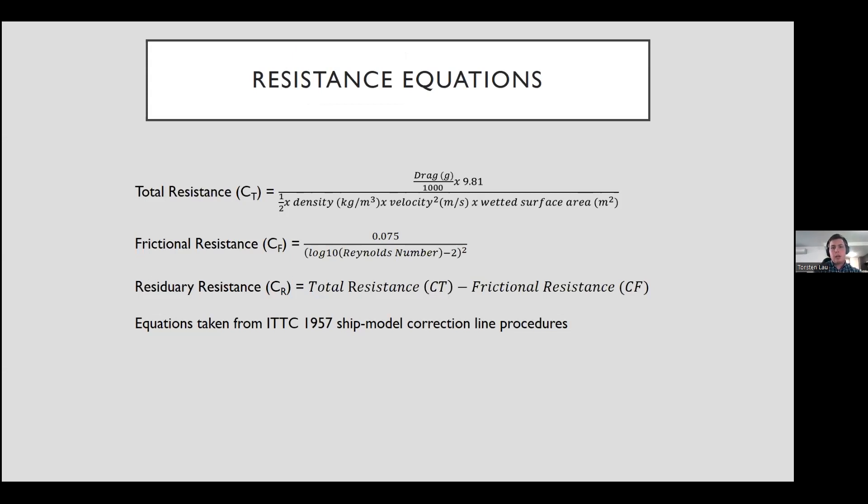After receiving our drag values and getting them all out, we were able to put them into these equations. These equations are taken from the ITTC 1957 ship model correction line procedures. This just allowed us to split total resistance out into its components that we were interested in.